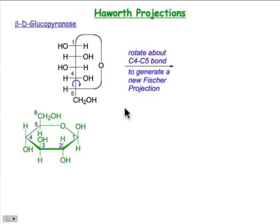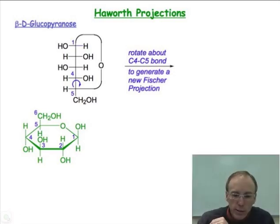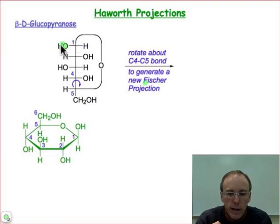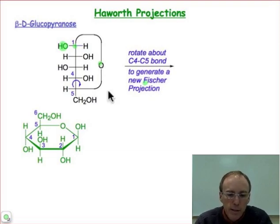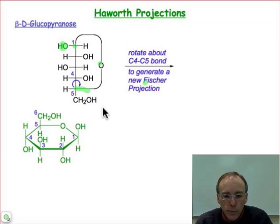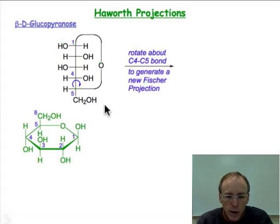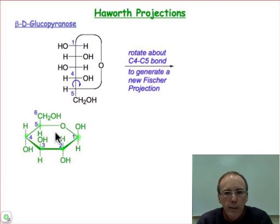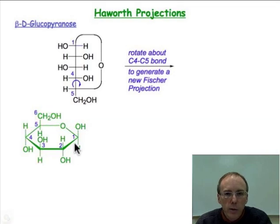Now let's take that Fischer projection and represent it in a three-dimensional form. I'd encourage you to build a model of glucose if you haven't already done so. Here's the Fischer projection we just finished drawing — this is the β-anomer, with the hydroxyl group at the anomeric carbon on the left-hand side, opposite the D-defining position. We want to draw this into a three-dimensional form, and a convenient form is the Haworth projection. In the Haworth projection, starting at carbon atom 1, all of the ring atoms are in a plane, and substituents are either above or below that plane.